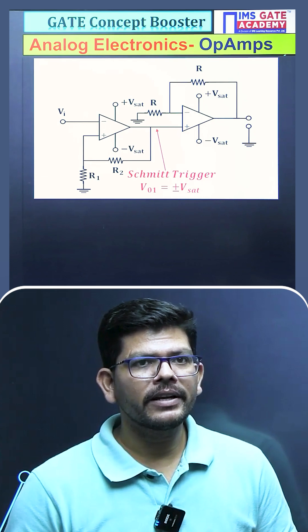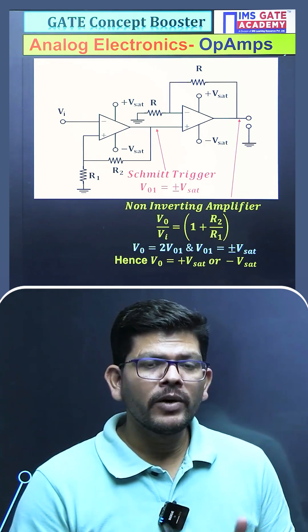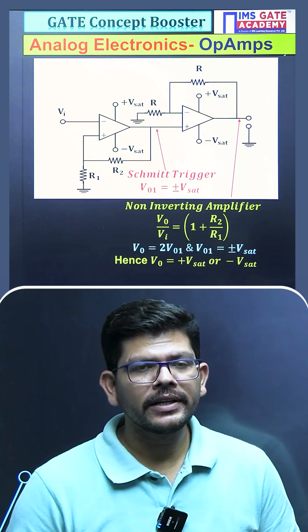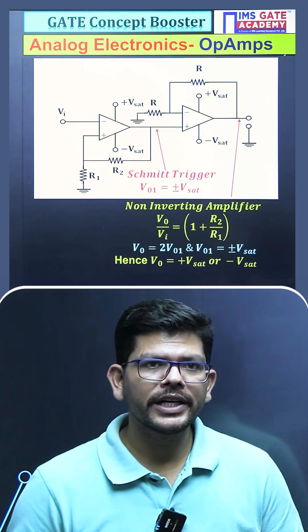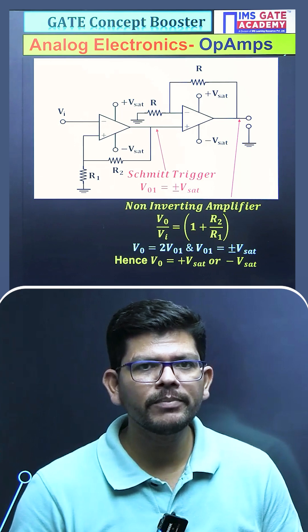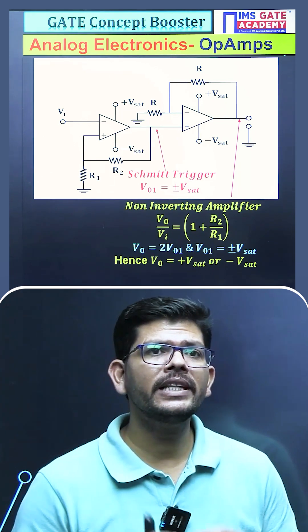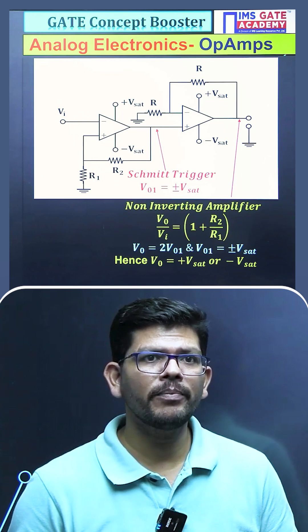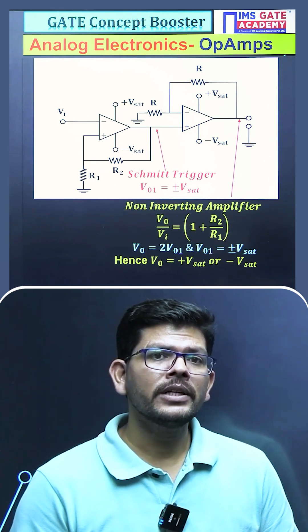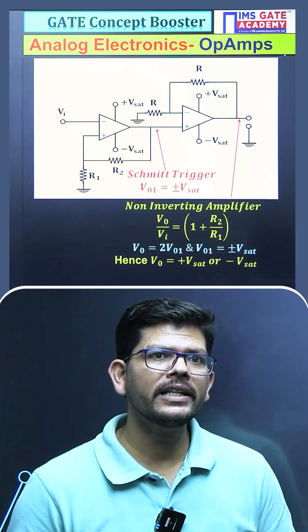So output of a non-inverting amplifier will be (1 + R2/R1) times the input voltage. Or we can also call it that output voltage upon input voltage, which is gain, will be 1 + R2/R1. So in this way we will get the output voltage of the second op-amp equals to two times the output voltage of the first op-amp.